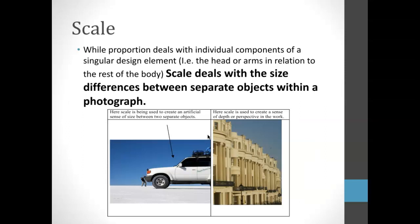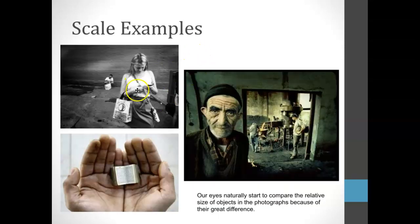Scale has to deal with the size difference of different objects within a picture. It's used to create depth and perspective in a work, and it can fool our eyes into believing things that aren't working in reality. For example, this car is definitely much larger than the person, but in this case we've made the person look even smaller than they would in real life, like a little miniature version. This is because of the distance and the focal length used in the image. Things closer to the camera will be larger versus further away.